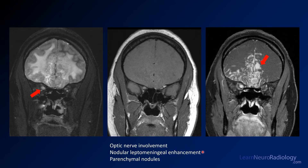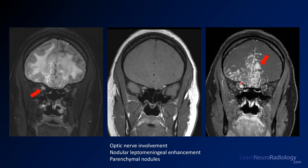Now here, this is from our case. You see the degree of enhancement is much, much worse, but you do see the same kind of things — leptomeningeal enhancement and parenchymal nodules that are a little bit dark to intermediate on T2. The optic nerves in this case are involved as well. You see this right optic nerve is very thick and very enhancing, going all the way to the orbital apex. So this has all the features, but it's a really extreme case — one of the worst cases of sarcoidosis I've ever seen.